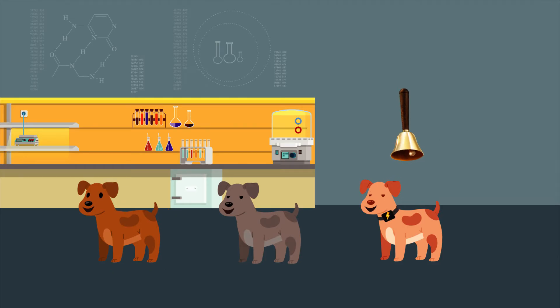Seligman experimented with dogs. First, a bell would be rung and the dog would receive a shock. After a number of pairings, the dogs were classically conditioned. Once they heard the bell, they'd react as if they'd already been shocked.